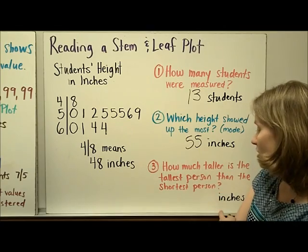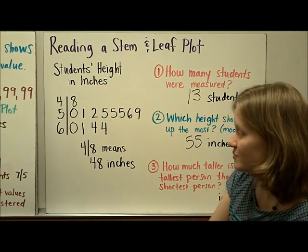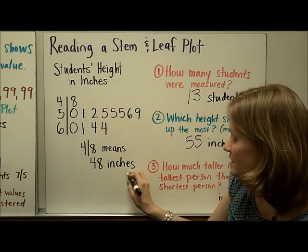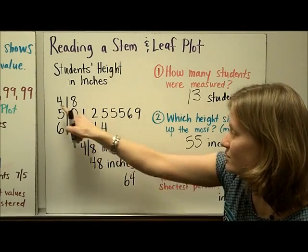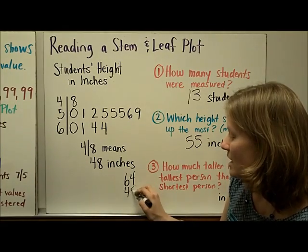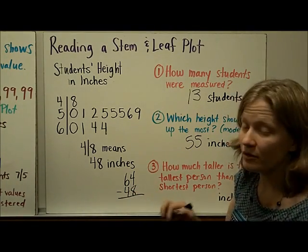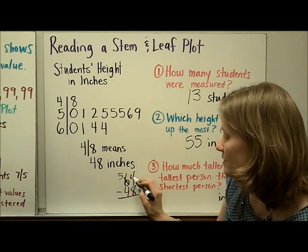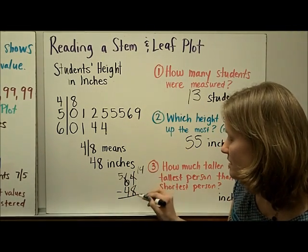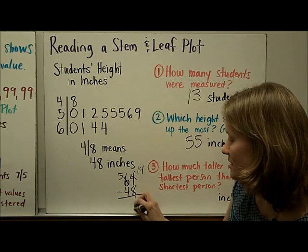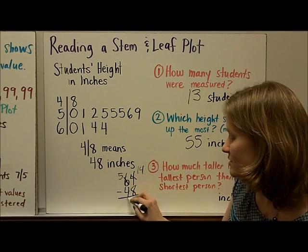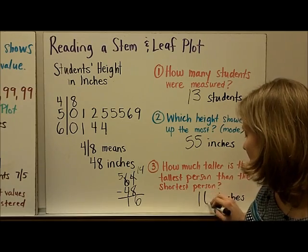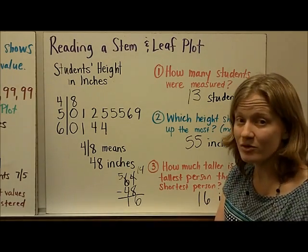Finally, how much taller is the tallest person than the shortest person? The tallest — actually there are two people this height — were 64 inches, and the shortest person was 48 inches. To find how much taller, I subtract: 64 minus 48. I'll borrow — 14 minus 8 is 6, and 5 minus 4 is 1. So the tallest person is 16 inches taller than the shortest person.